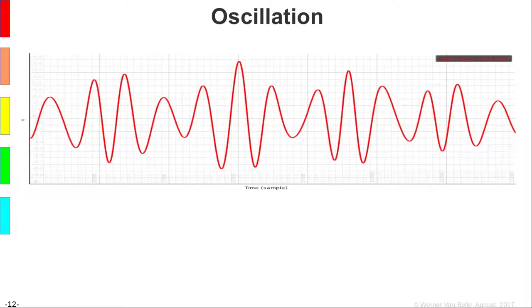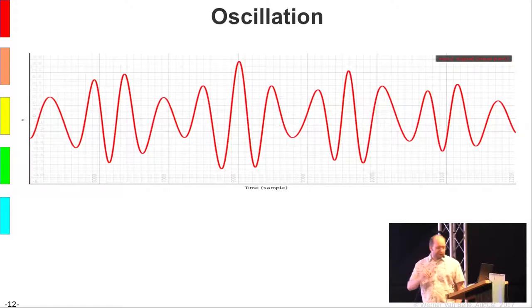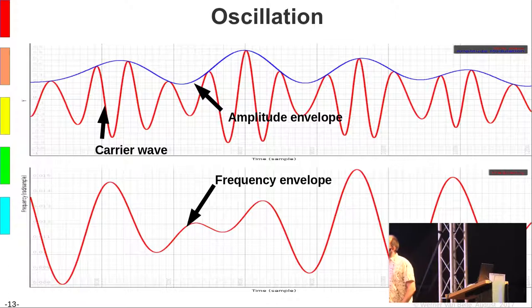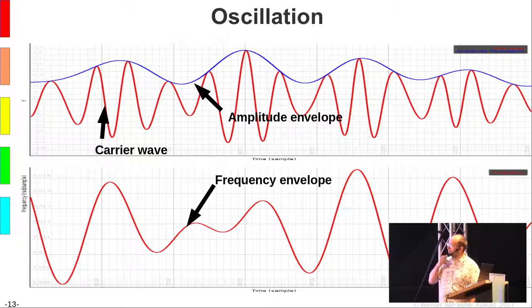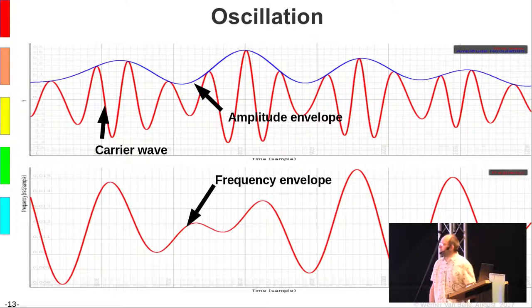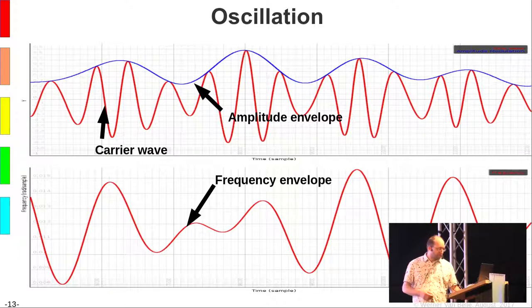The reason this model looked attractive is that if you look at a wave directly, you can't really time-stretch it. But if you decompose it into a carrier wave, an amplitude envelope, and a frequency envelope — which shows how the spacing in zero-crossings changes over time — then a frequency envelope is also essentially a phase envelope, for practical purposes.